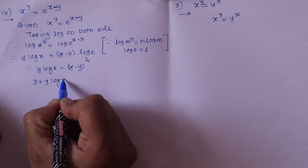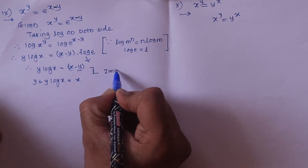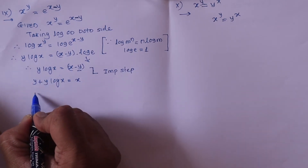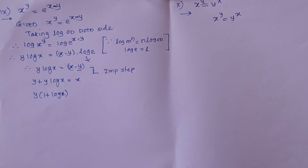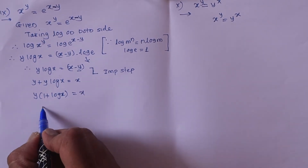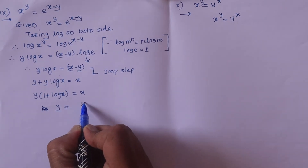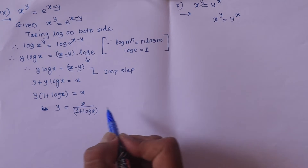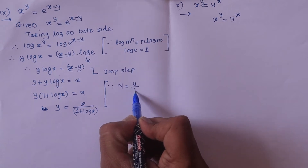This is an important step: log x. The minus will become plus here. Take out y as a common factor. Therefore y equals x upon (1 plus log x). We have the rule y equals u upon v for the quotient rule.